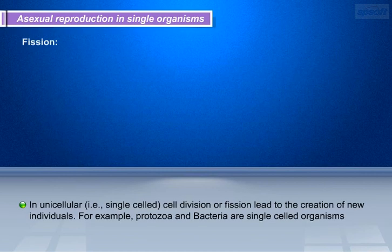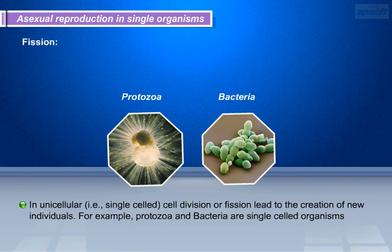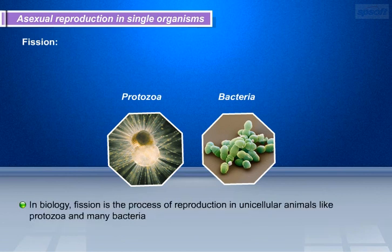We will start with fission. In unicellular organisms, cell division or fission leads to the creation of new individuals. For example, protozoa and bacteria are single-celled organisms. Many single-celled organisms like protozoa and bacteria just split into two identical halves during cell division, leading to the creation of new organisms. This is called fission. In biology, fission is the process of reproduction in unicellular animals like protozoa and many bacteria.